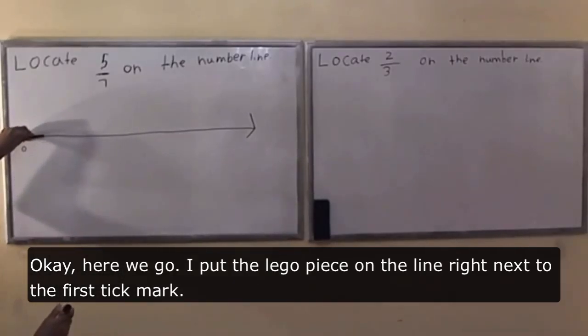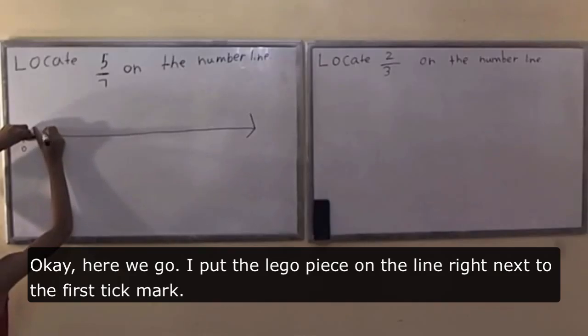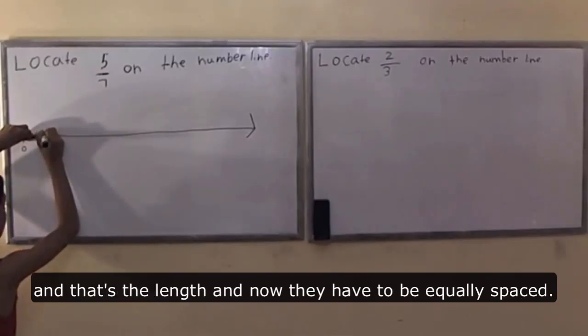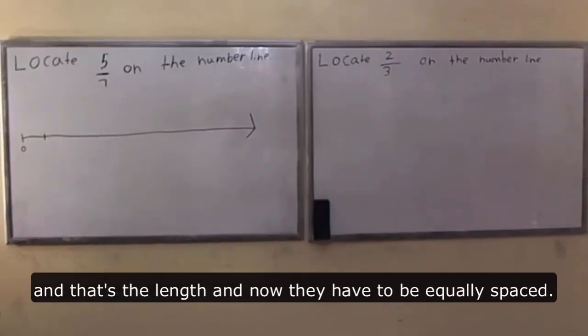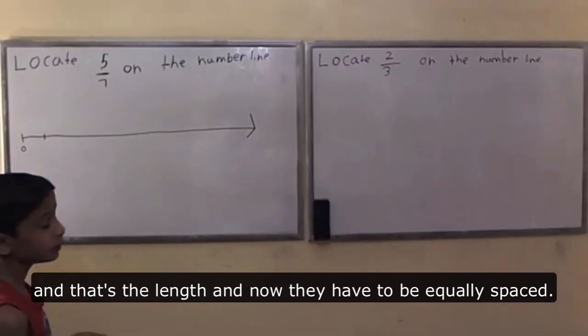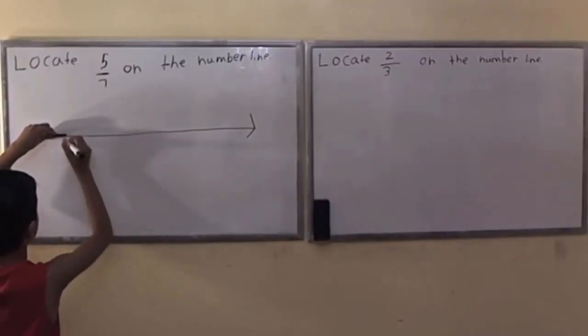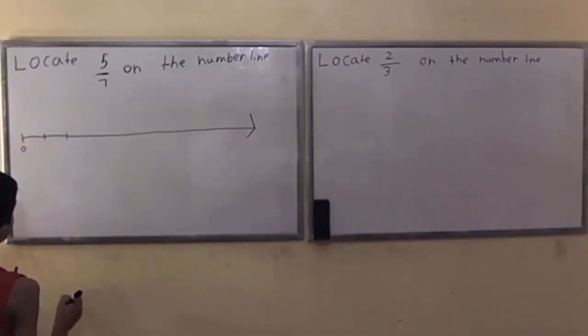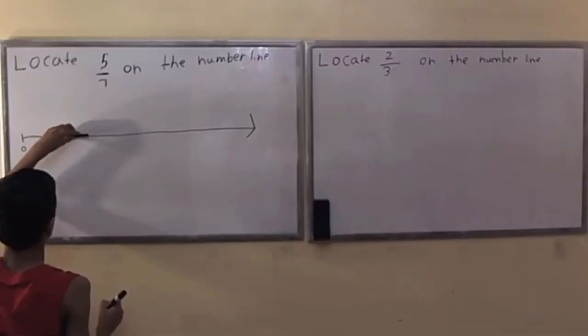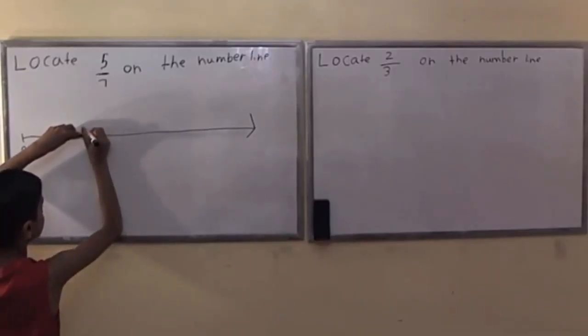I put the Lego piece on the line right next to the first tick mark. Now they have to be equally spaced. I don't really know if that was equally spaced, but whatever.